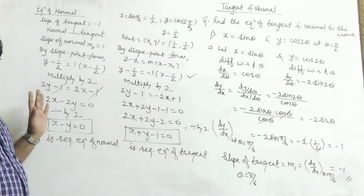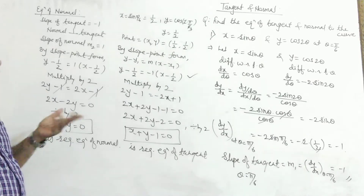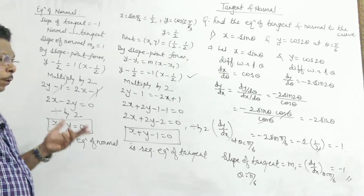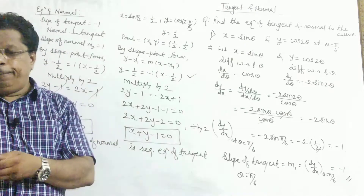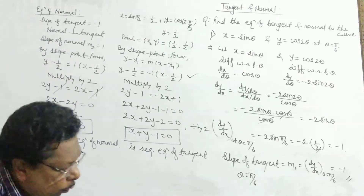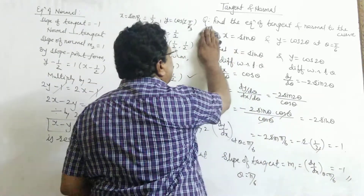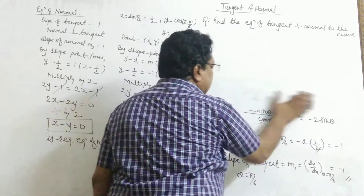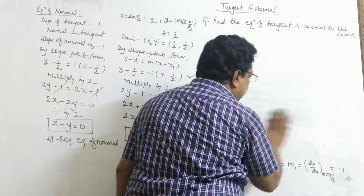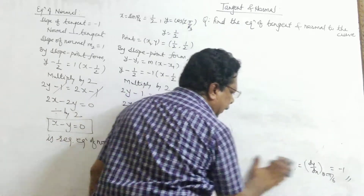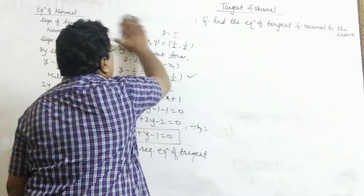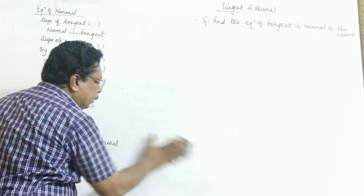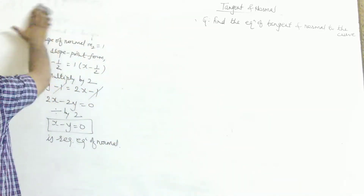In the first problem, the parameter was theta. Now we will take the second problem where the parameter is t. The question is: find the equation of tangent and normal to the curve given by parametric equations. The working procedure is the same — we will differentiate both functions with respect to t.